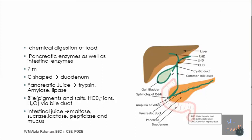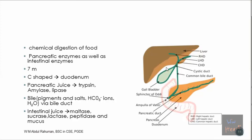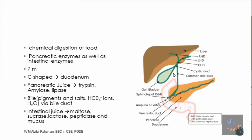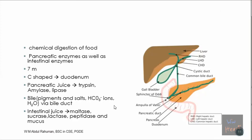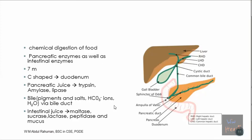Pancreatic juice contains amylase, lipase, and trypsin. At the same time, the gallbladder provides bile. Bile pigments contain salts, bicarbonate ions, and water. The intestine also has intestinal juice containing maltase, sucrase, lactase, peptidase, and some mucus. Using these three different types of juices and bile, chemical digestion takes place.